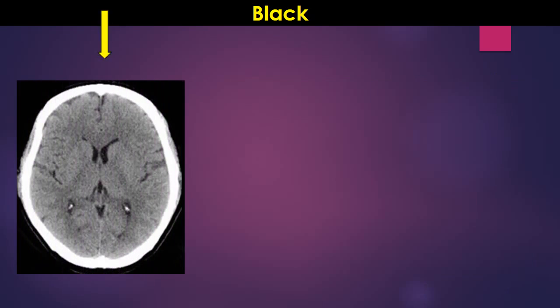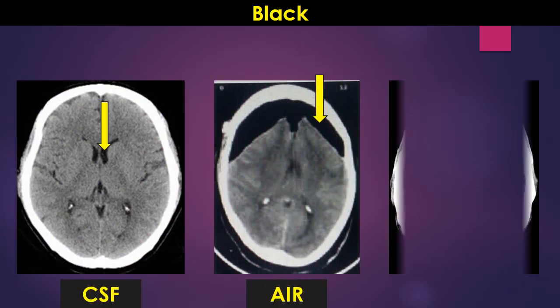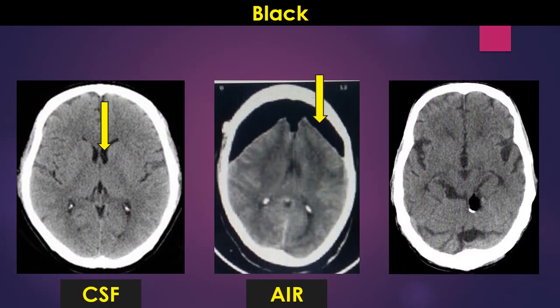Tissues which are seen black on CT brain are CSF, air, and fat which in this case is lipoma.